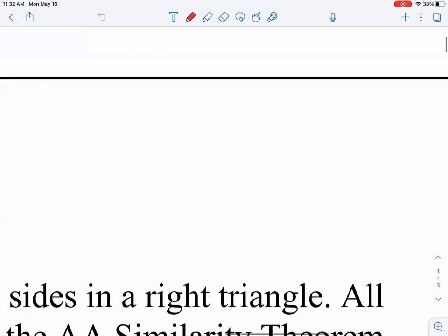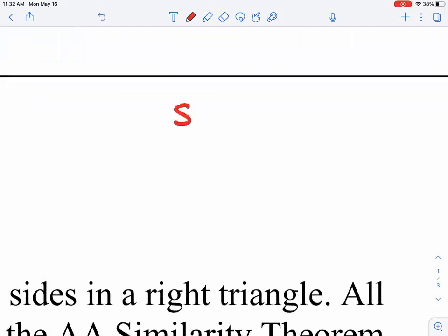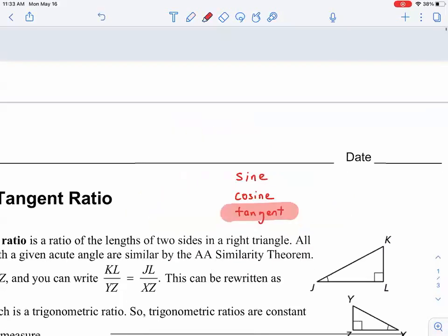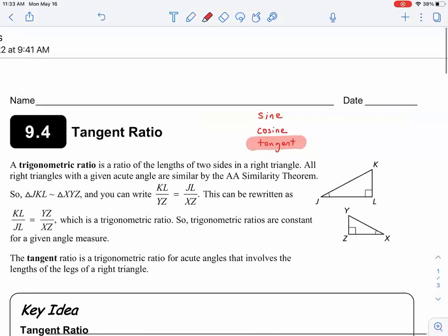So I'll write them down here. You don't even need to write all three of them down, but just so you know, the three most common things are the sine, the cosine, and the tangent. And what those are, how we're going to look at those is in terms of side lengths. And in fact, we are only going to focus on the tangent today. So we are only looking at the tangent ratio.